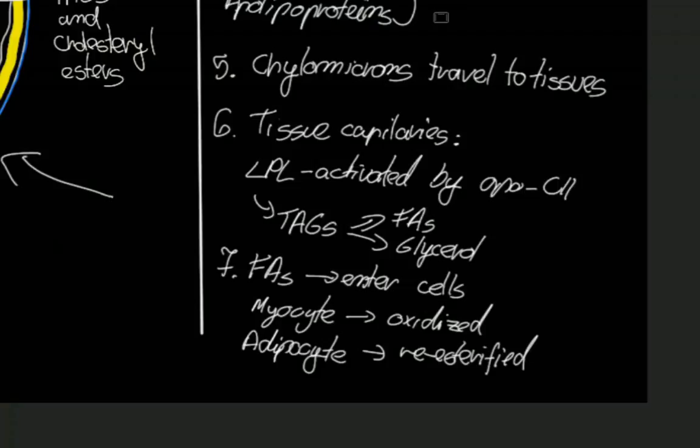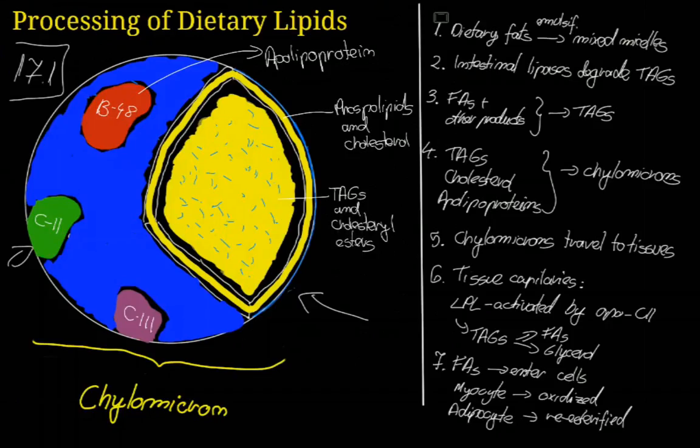What is left of the chylomicron, usually known as the chylomicron remnant or chylomicron remnants, travel to the liver and it is taken up through receptor mediated endocytosis. And the remaining triglycerides that enter the liver in this way can either be oxidized for fuel or used for a process called ketogenesis or the production of ketone bodies.